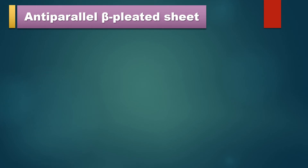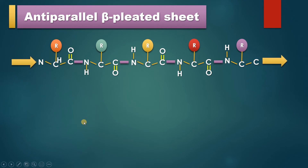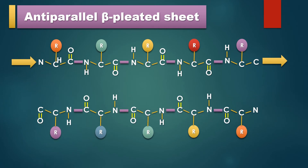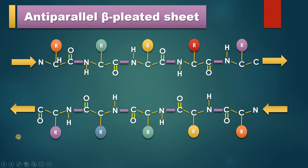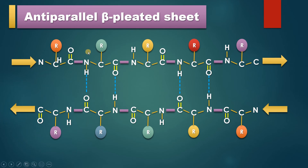Coming to anti-parallel beta pleated sheet — here one strand runs in one direction, so this is the N terminal and this is the C terminal. The same polypeptide chain can be folded with the help of a beta turn or loop, and again this segment runs in the opposite direction, so here we have the N terminal end and here we have the C terminal end. Both segments are anti-parallel. In this case, the hydrogen bonds are perpendicular.